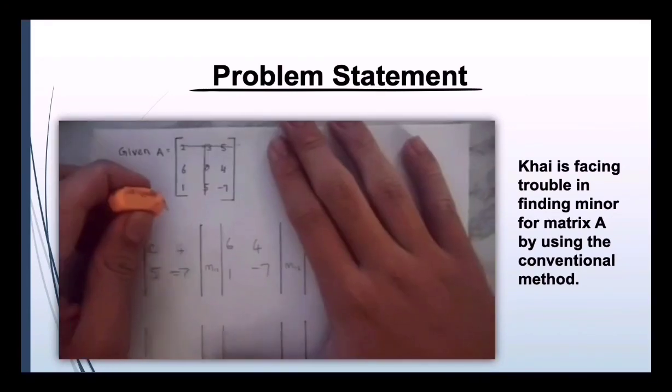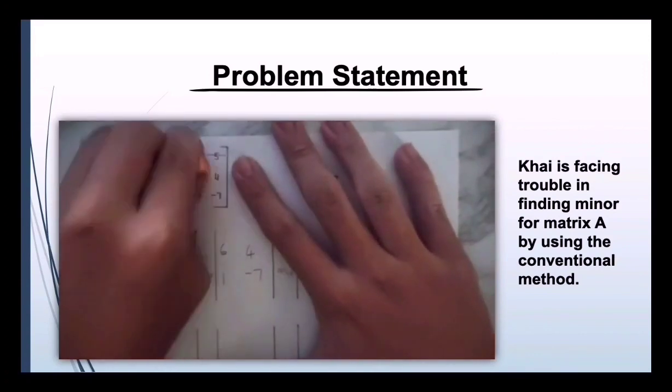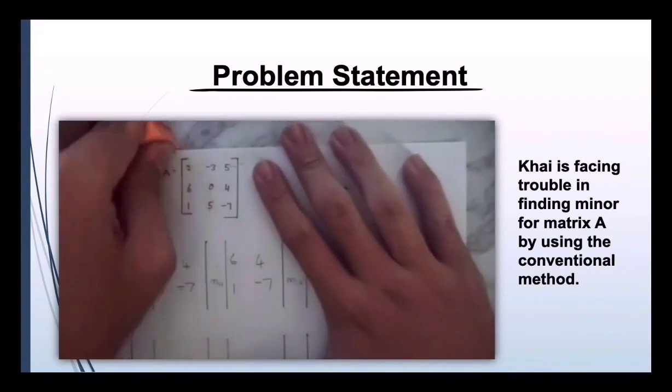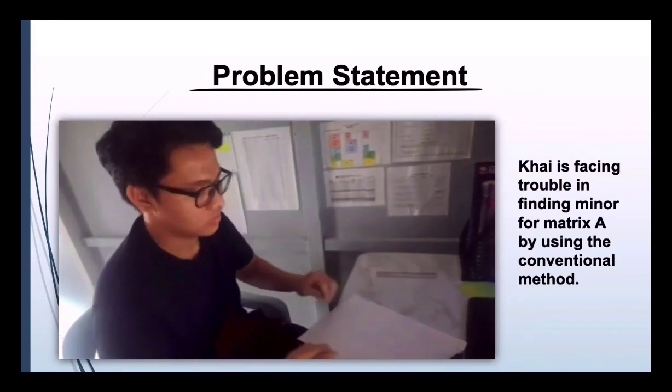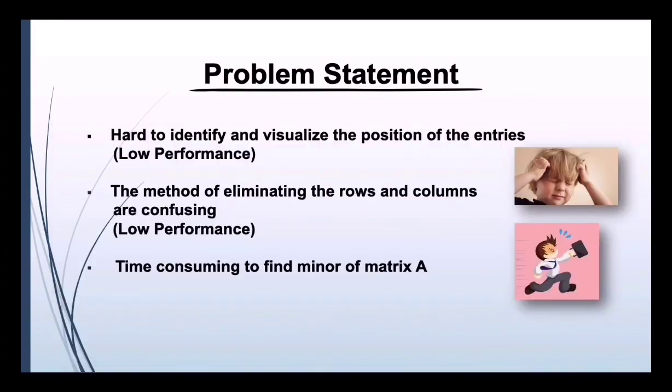Based on the video, a student is facing trouble in finding the minor for matrix A by using the conventional method. The problem statements are: it is hard to identify and visualize the position of the entries, and the method of eliminating the rows and columns is confusing. This results in low performance by the students. It is also time-consuming to find the minor of matrix A.